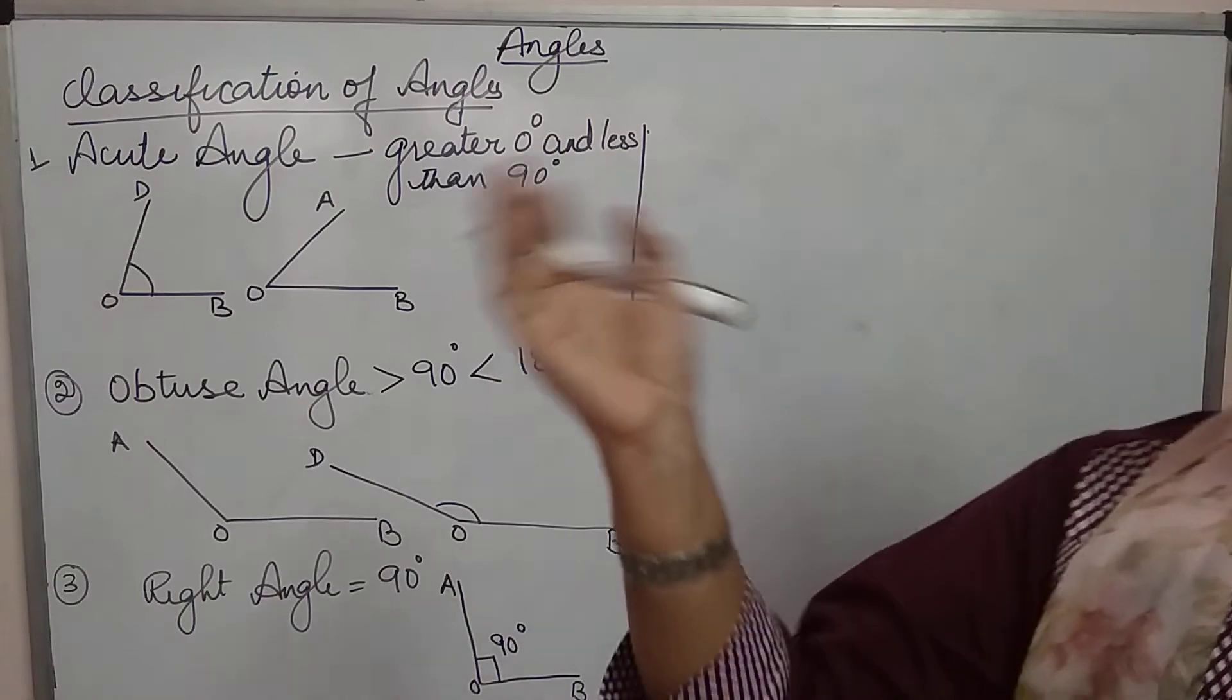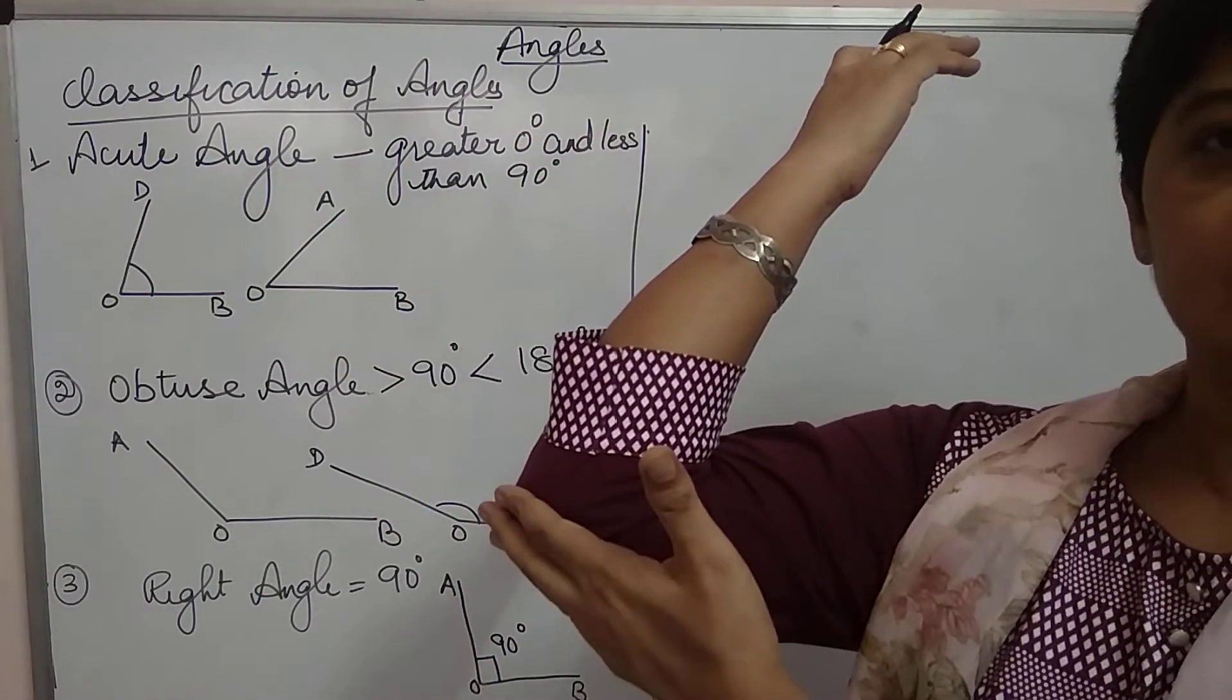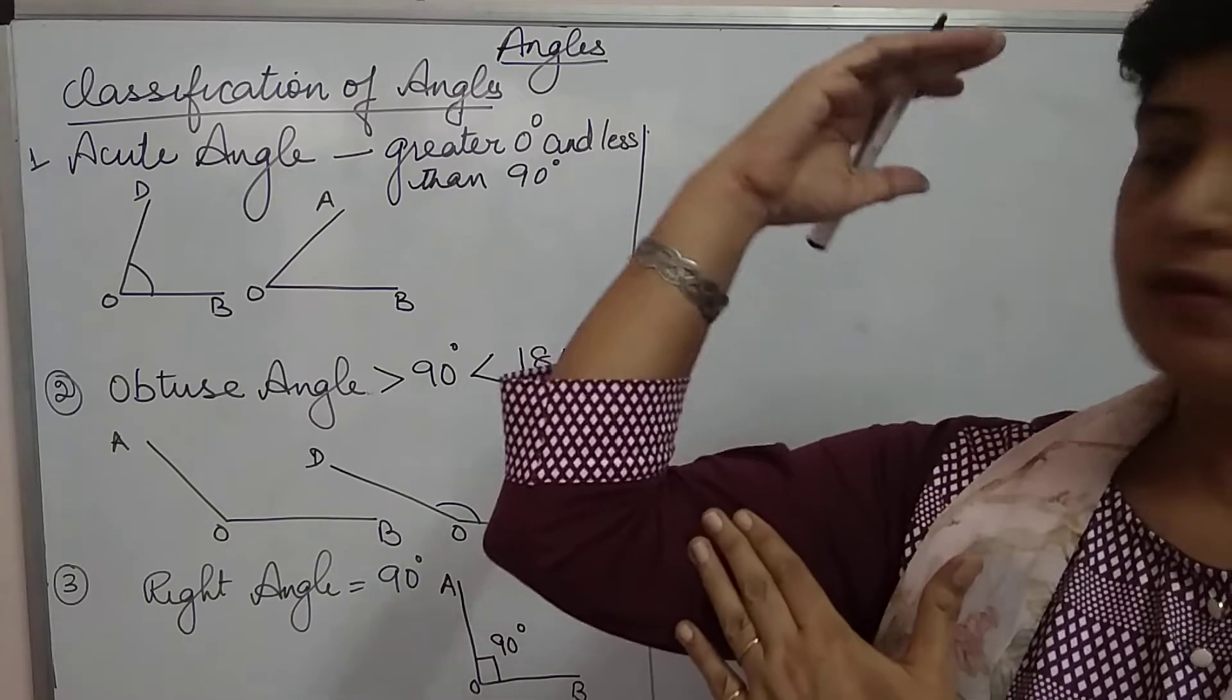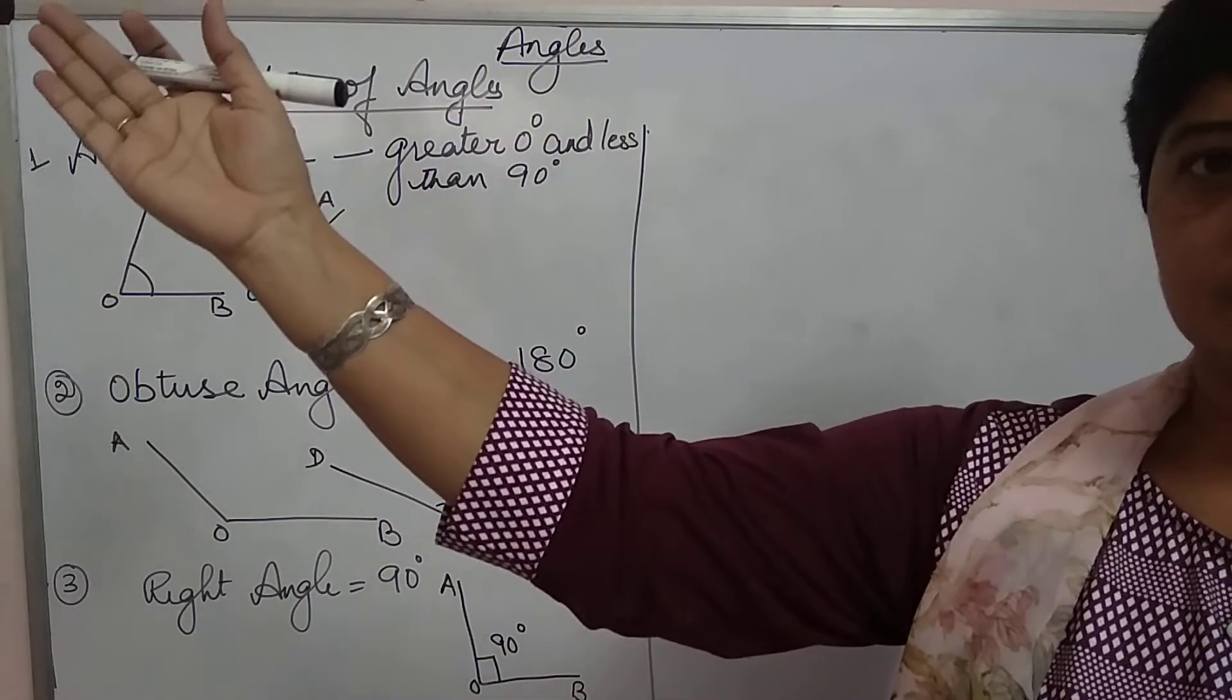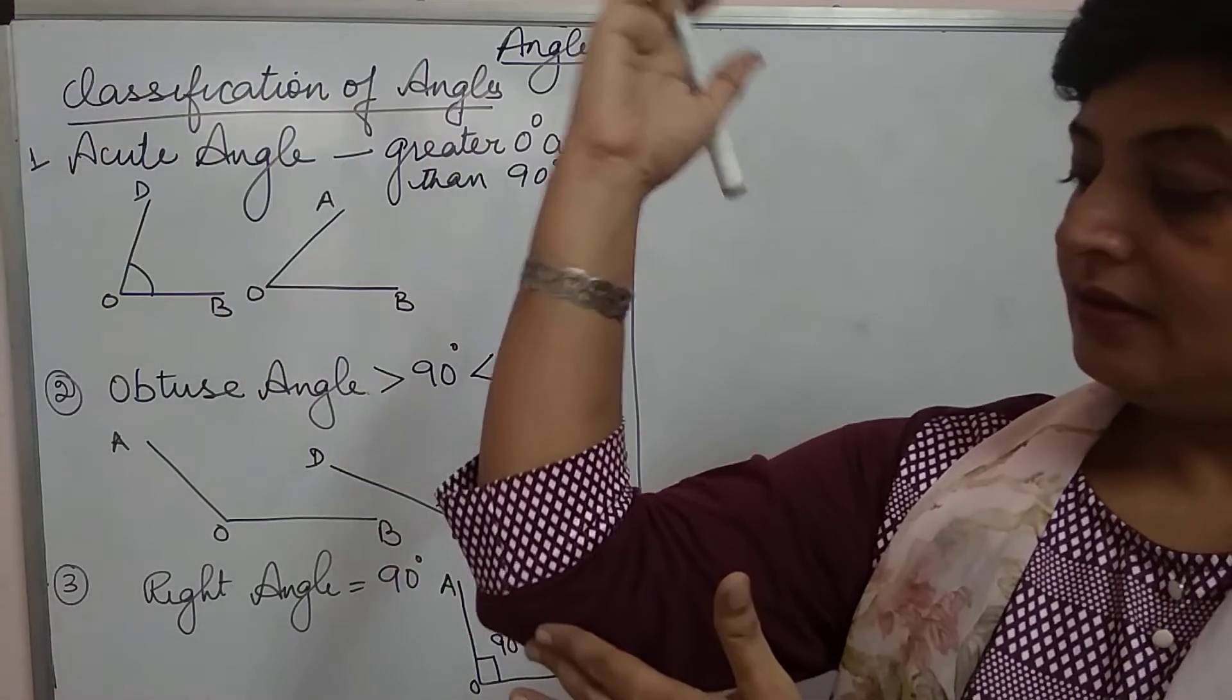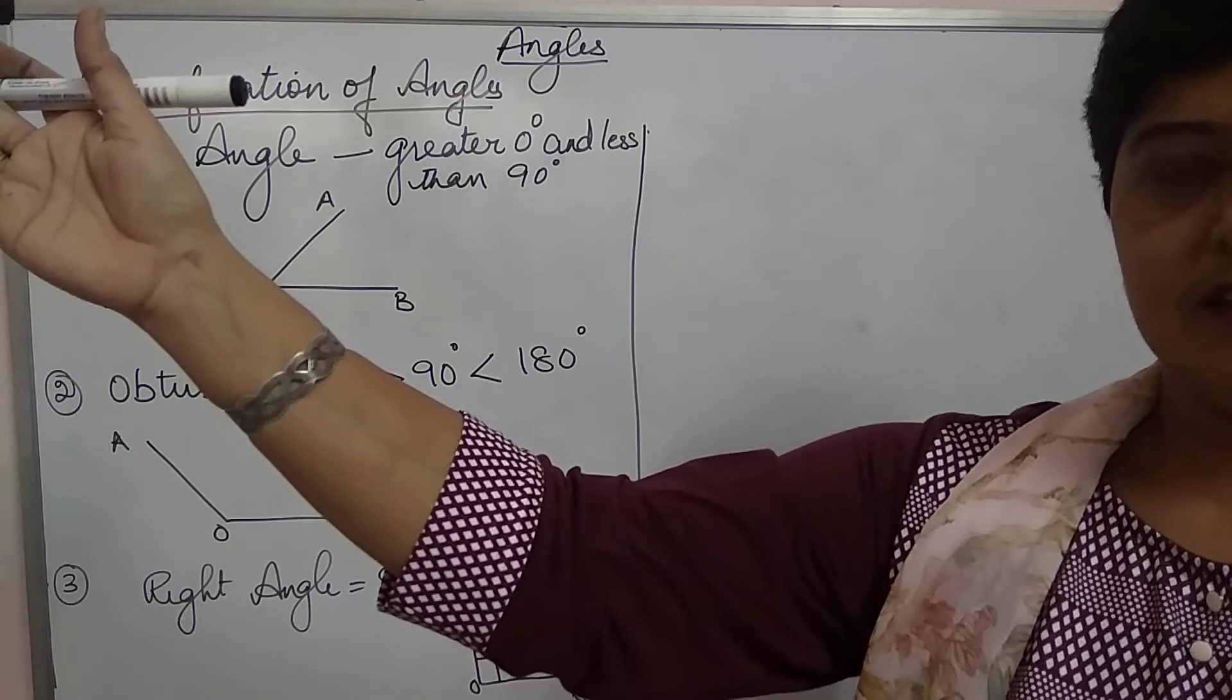We can even form these angles with the help of our arms. Let this be the vertex and these are two arms. So, this is acute, this is right, this is obtuse. Again, this is acute, this is right and this is obtuse.